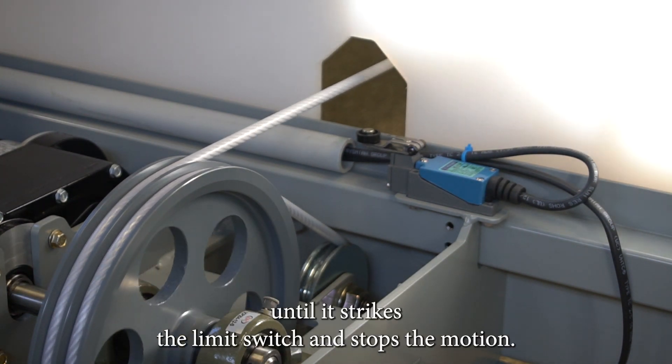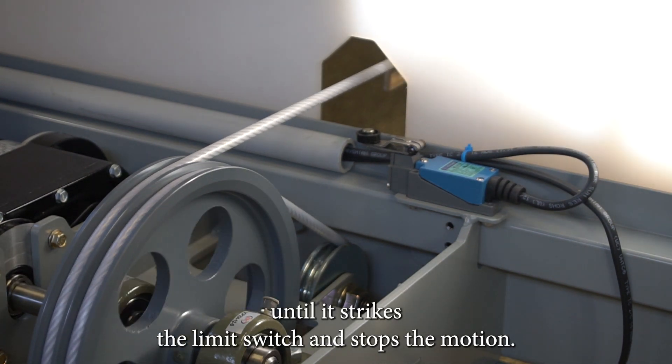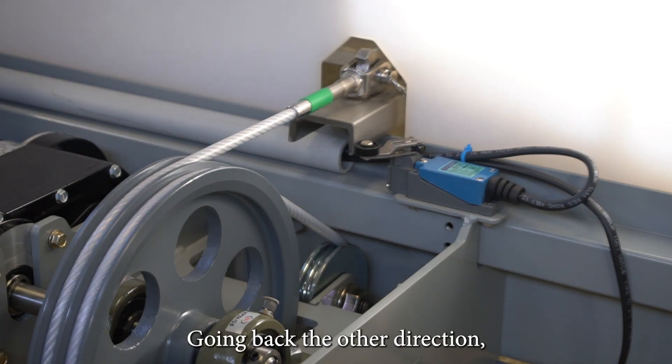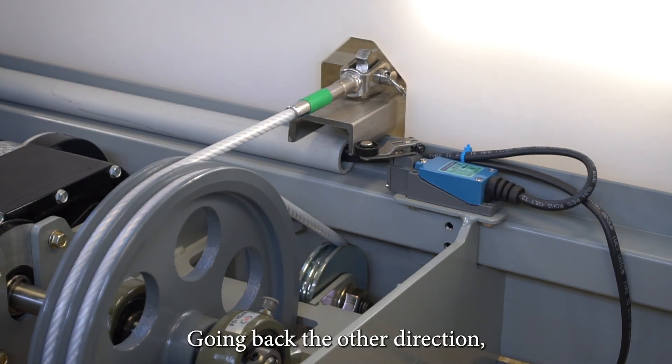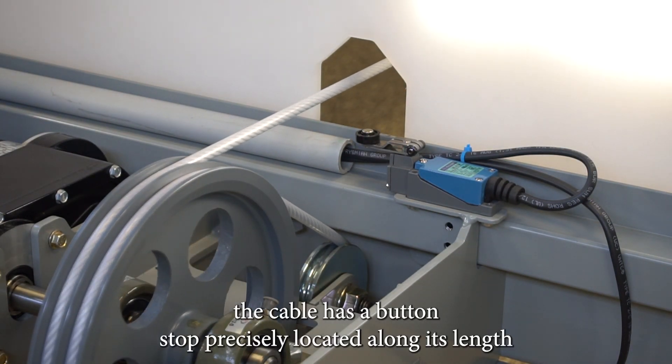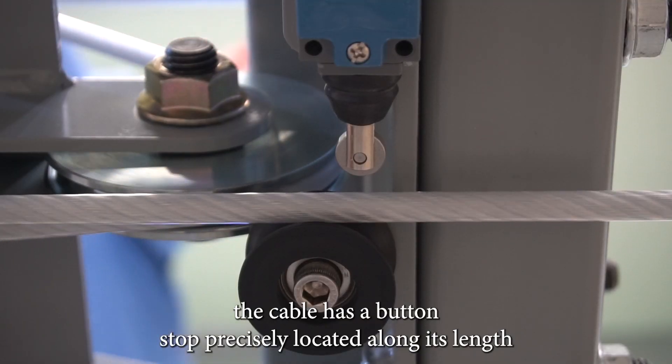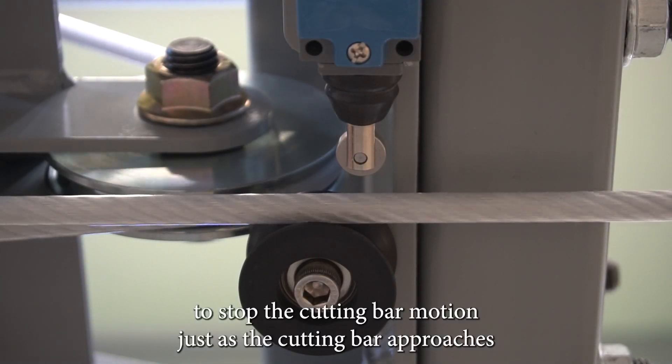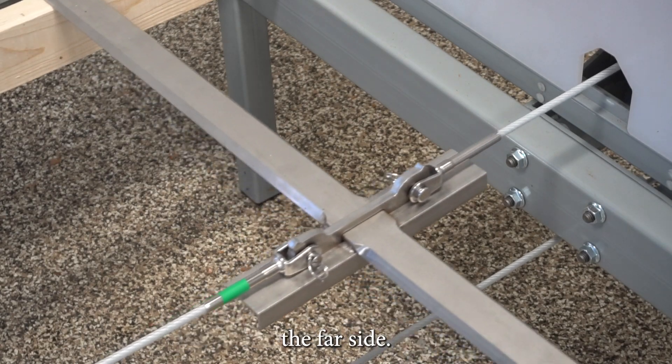The cable pulls the cutting bar until it strikes the limit switch and stops the motion. And going back the other direction, the cable has a button stop precisely located along its length to stop the cutting bar motion just as it approaches the far side.